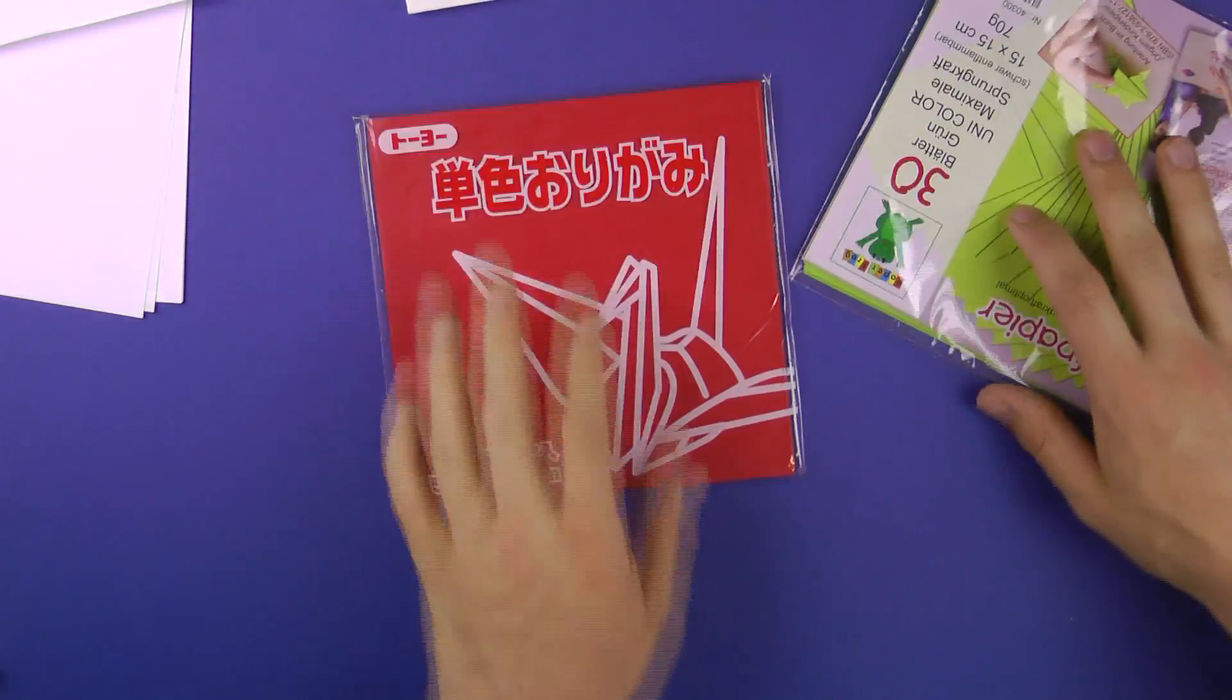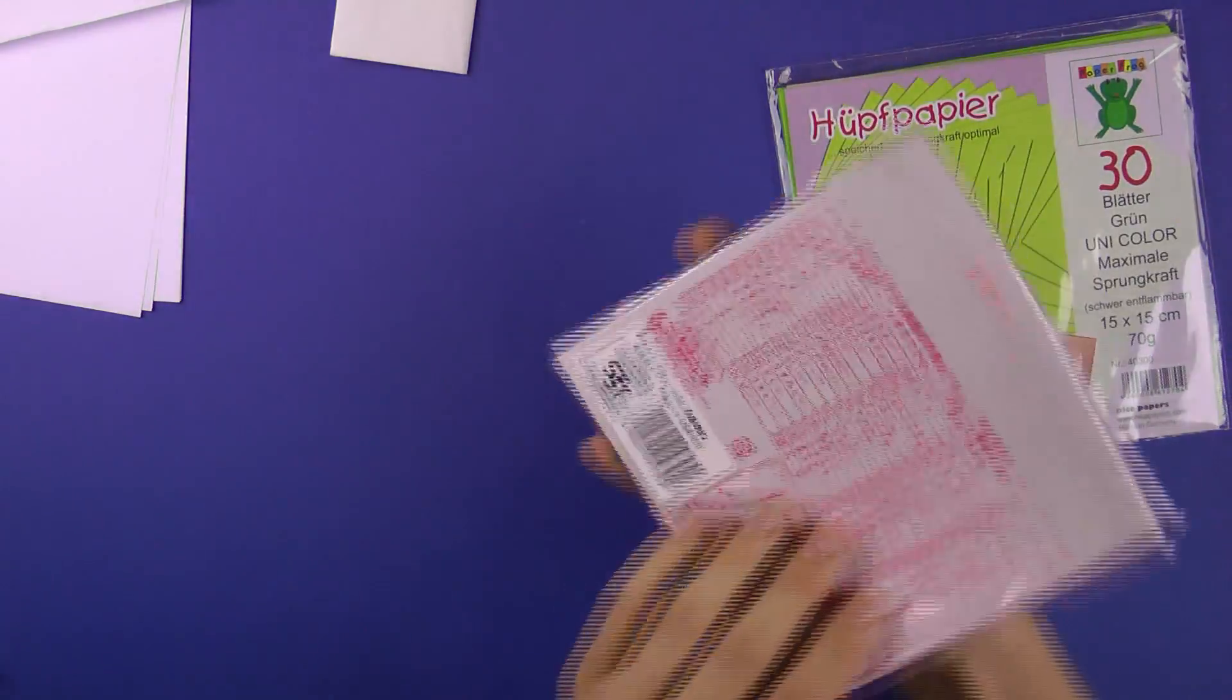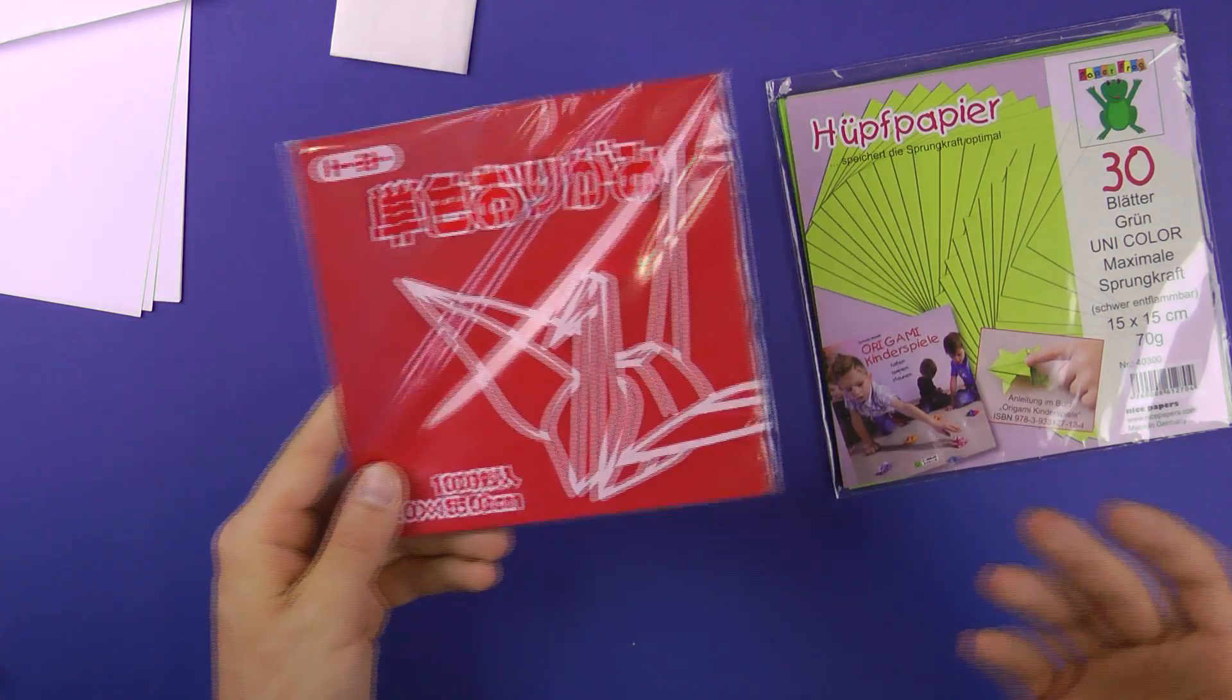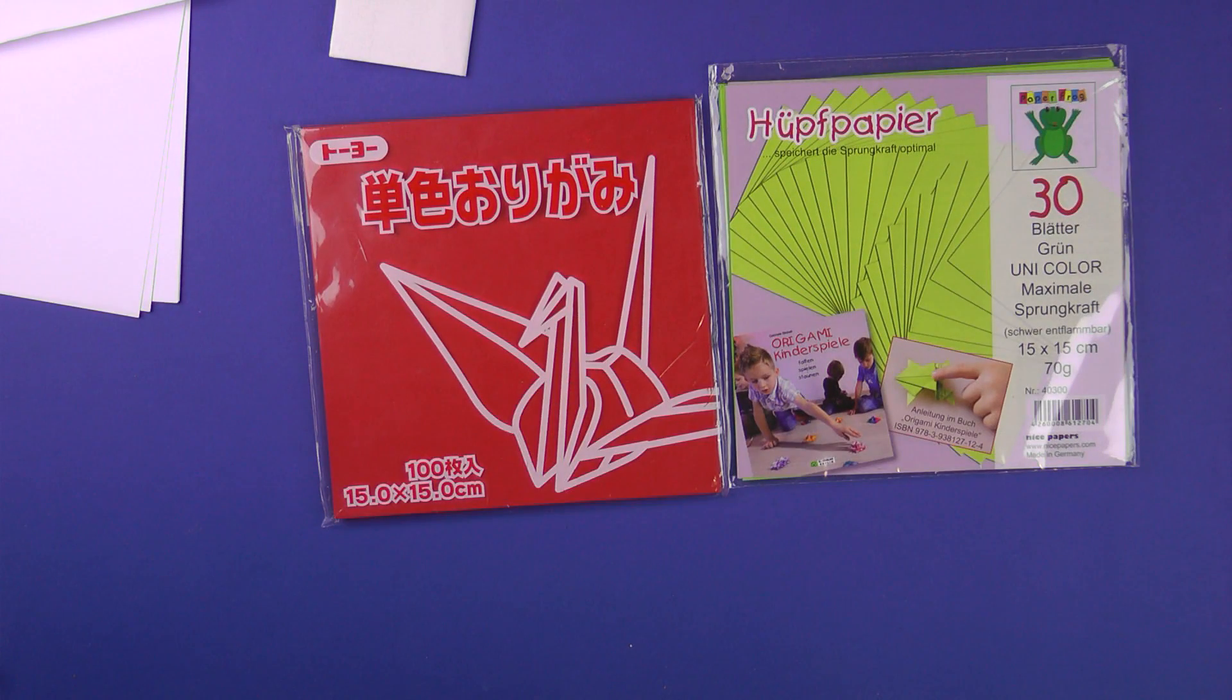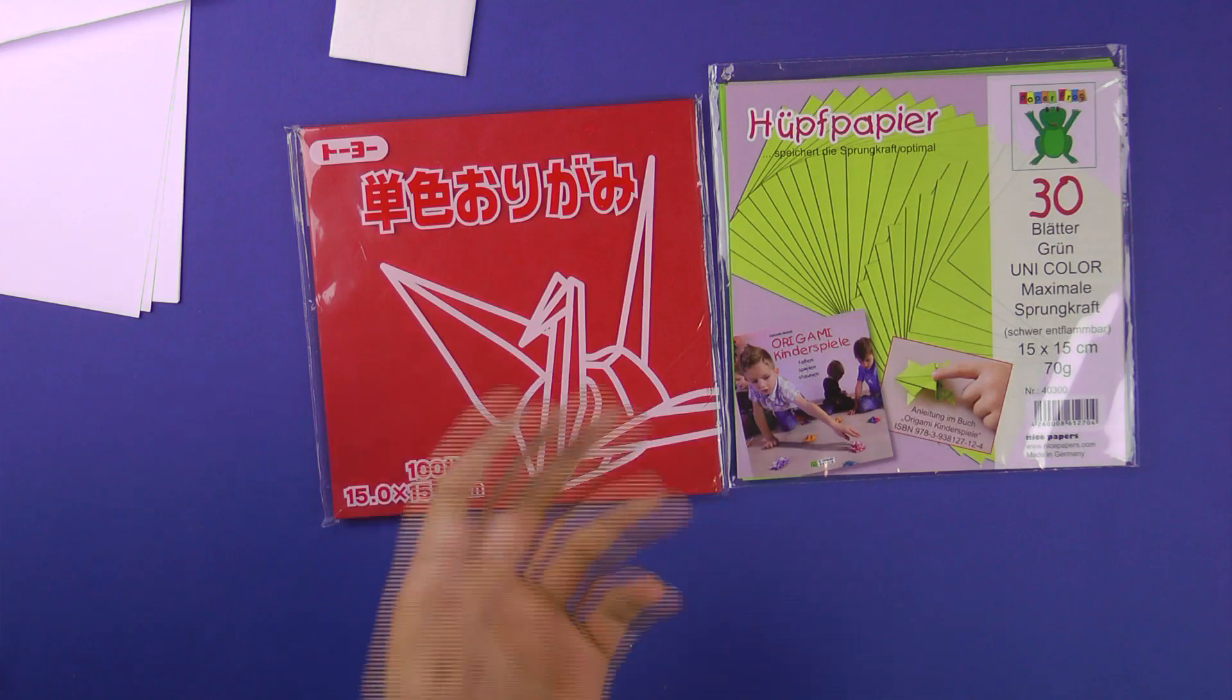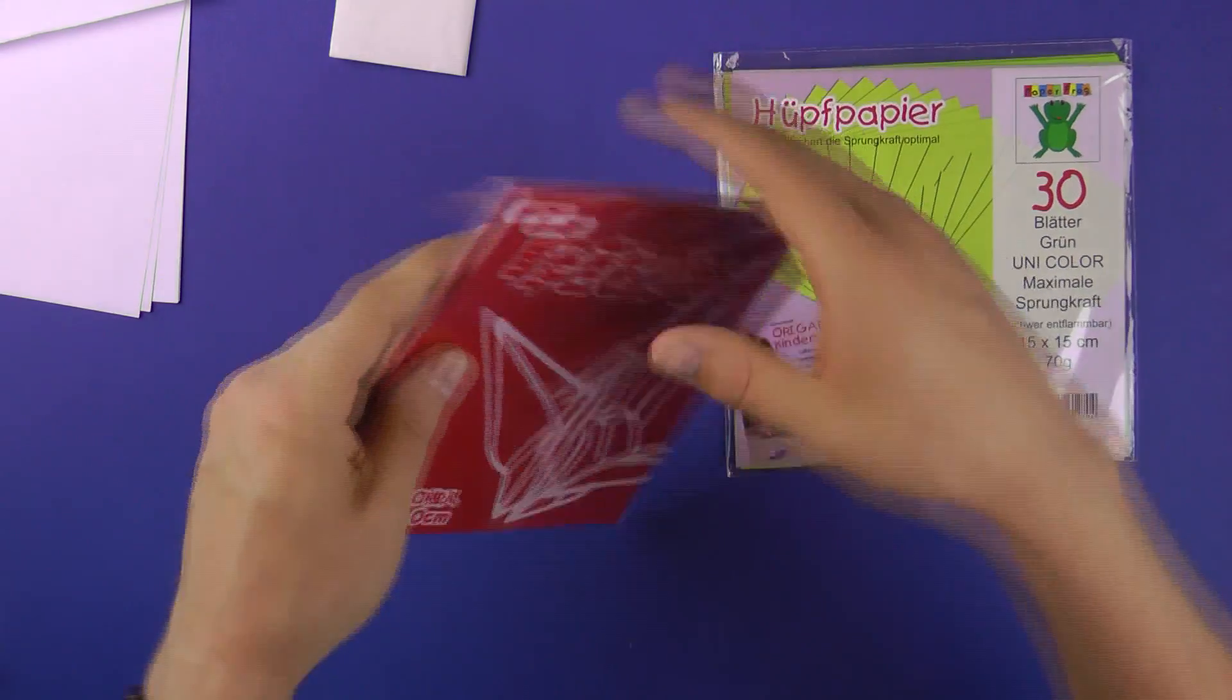What I actually like to use is paper that is origami paper like this Japanese one. I can't tell you the brand but I have different brands. I tried a lot of them. What I like is Koma, I like more expensive ones like Bashi which is handmade paper but it's really a matter of taste.